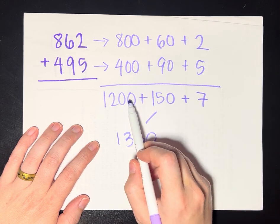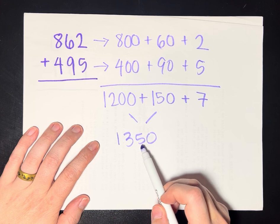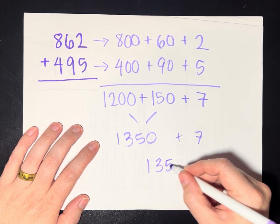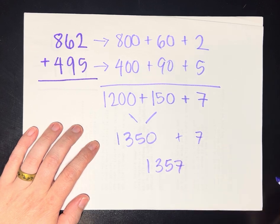And then no 10s here, so 5 tens here, that's 50. And then I need to add the 7, and so I get 1,357 for the answer to this question.